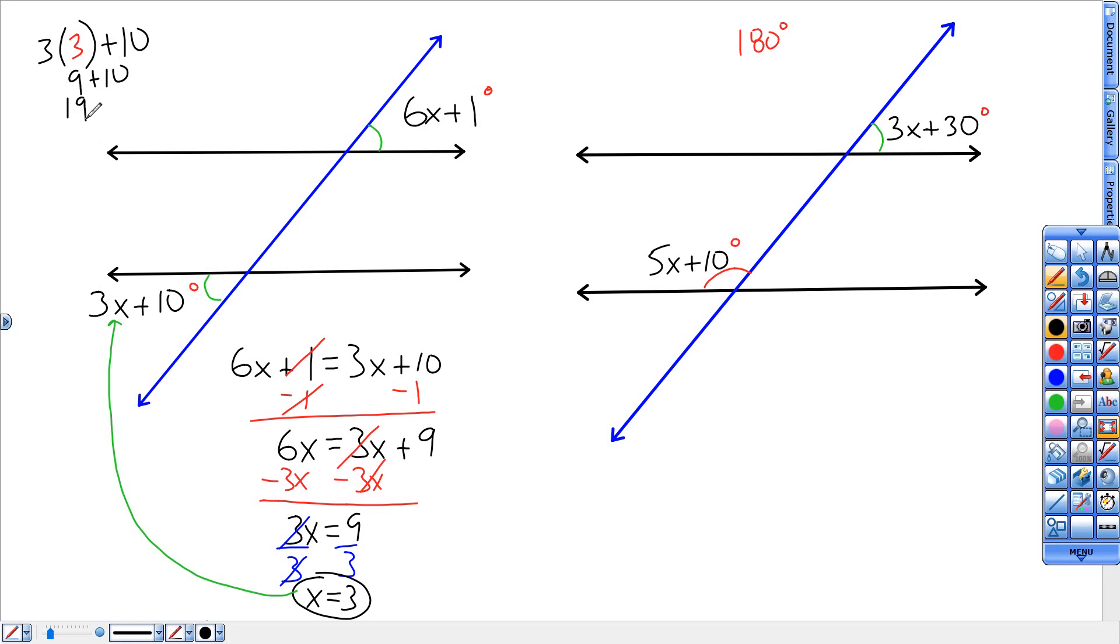So that is the degree right there, 19 degrees. So that angle, I'd like you to write them in there. This is 19 degrees. x is 3, but the angle is 19. If that's 19, this is 19.